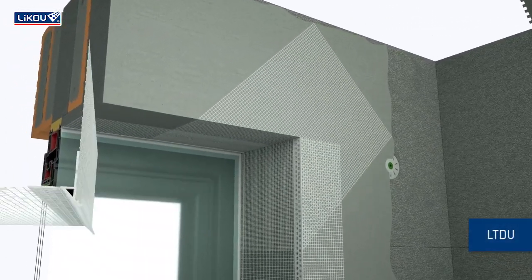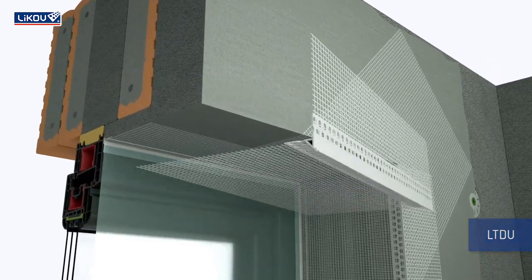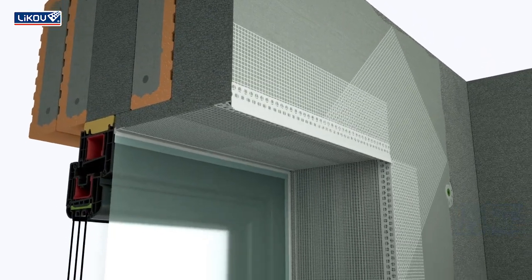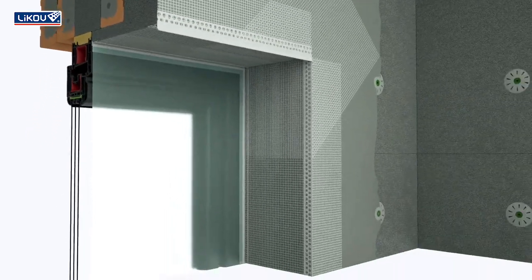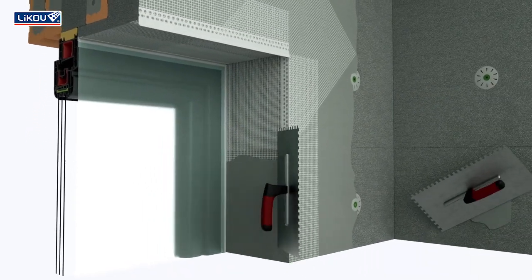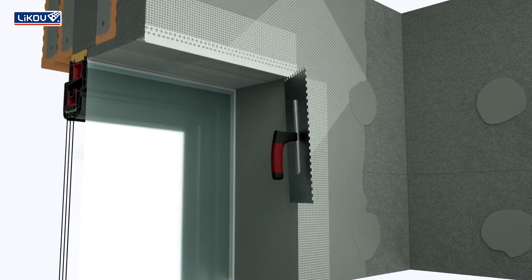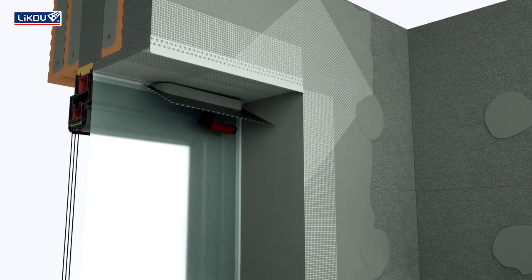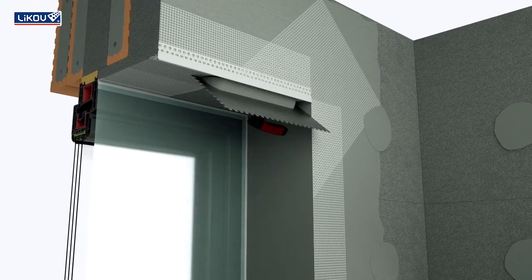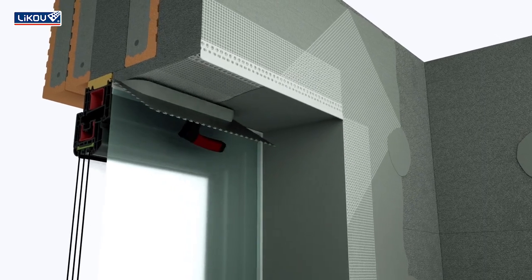Fit the window drip bead to the window head, for example, LTD. If the meshes do not overlap one another by at least 10 centimeters, it is necessary to insert another strip.